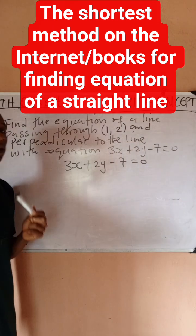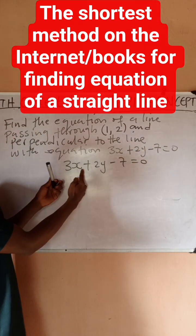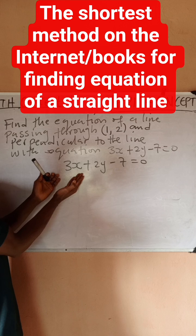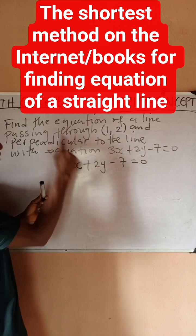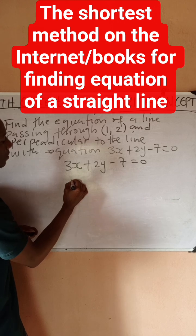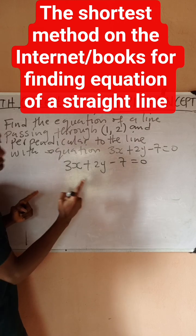So I'm going to have this now. Going to that line we're looking for would now become 2x, there'll be an exchange of coefficient, then this sign becomes minus, then 3y.